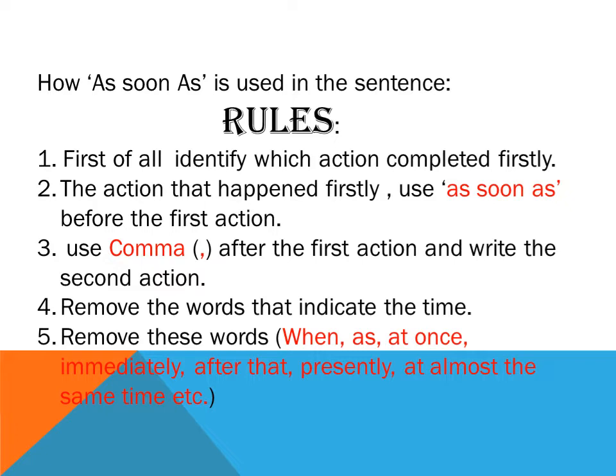There are some rules for using 'as soon as' in a sentence. First, we have to find out which action was completed first. We begin our sentence with 'as soon as,' then mention the first action, then use a comma, and after the comma we write the second action or second sentence.